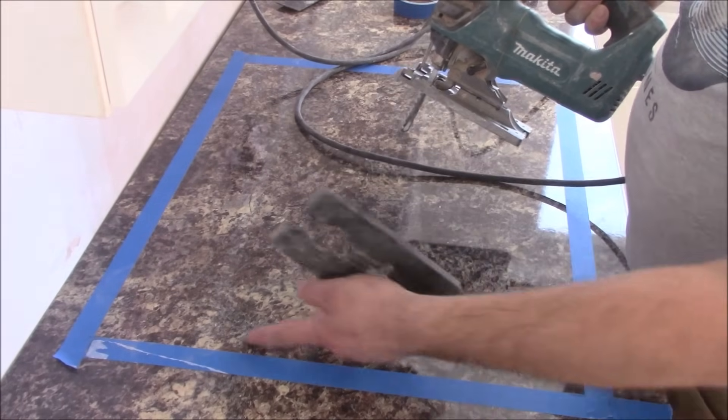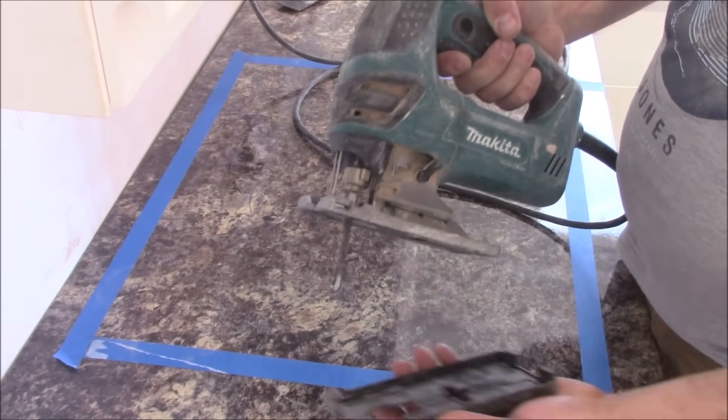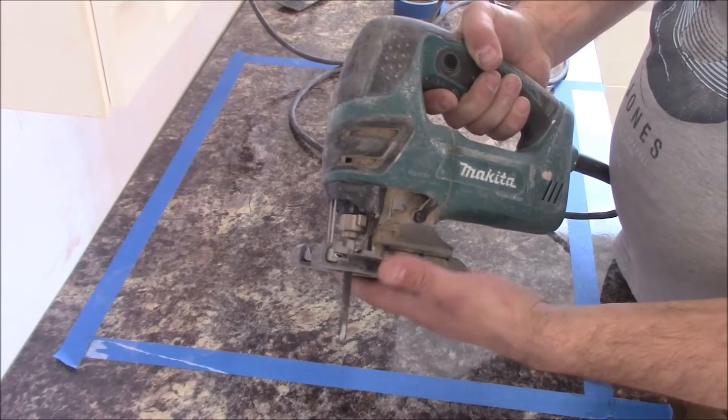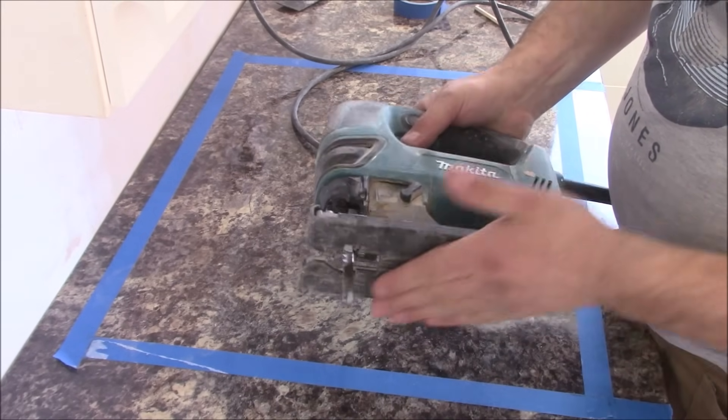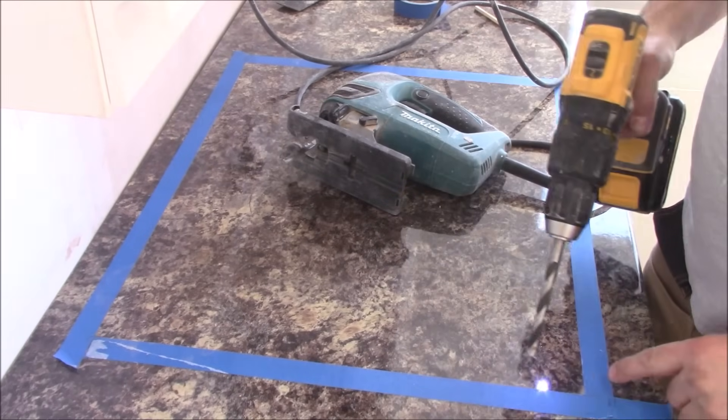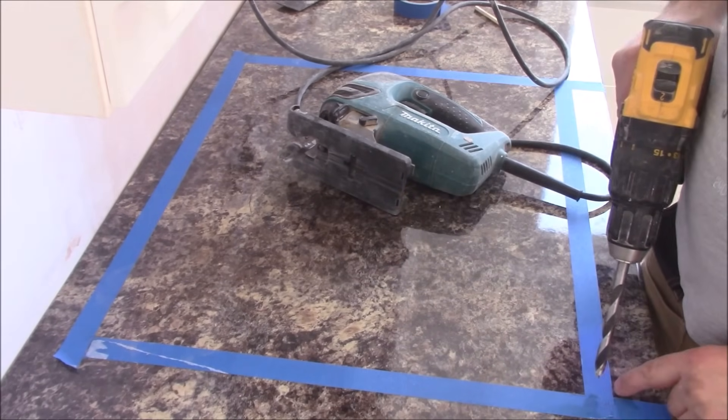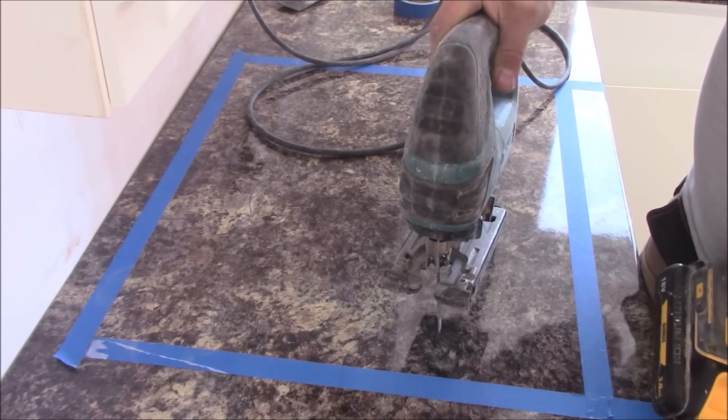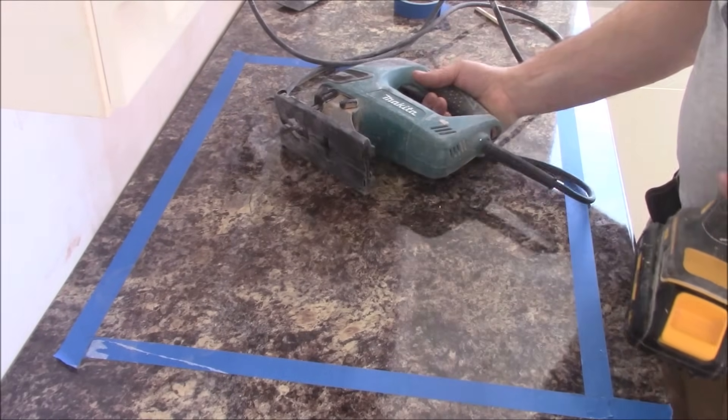For making a cutout for the hob I'm using simple jigsaw. I've got the plastic pad here so the worktop won't be scratched. First I need to make 4 holes on the edge of this square, and then I can push the blade with the jigsaw in it.